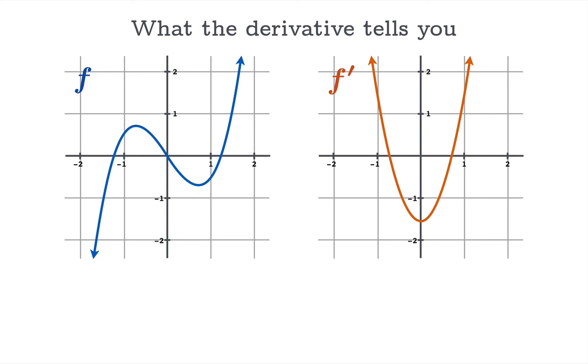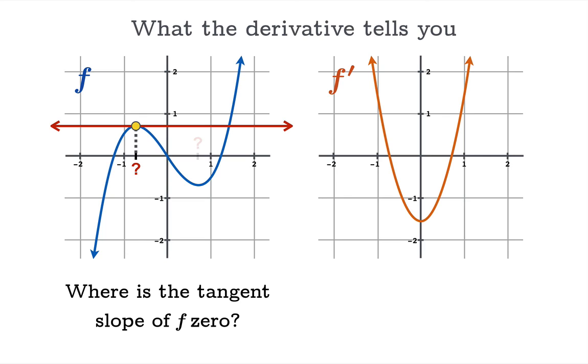We can sort of ask more sophisticated questions like where is the tangent slope of f 0? So we can sort of eyeball it in this graph over here. We can see two locations where the tangent slope appears to be 0 but if we actually have our hands on the derivative function f prime we could simply solve the equation f prime of x equals 0.